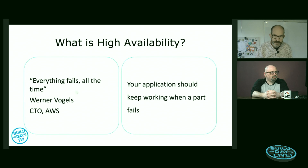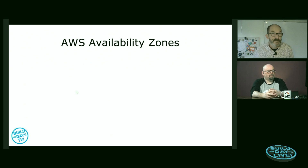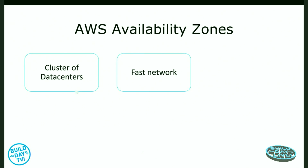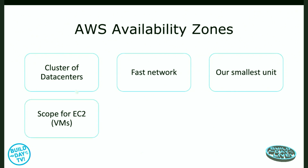One of the levels of availability is around this thing called availability zones. AWS has this idea of an availability zone that is a cluster of data centers. It might be one data center, it might be multiple, but they're all very close together and connected by a very fast, very low latency network. From our point of view as users of this infrastructure, they're our smallest unit — we just treat an availability zone as if it were one data center.